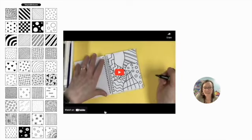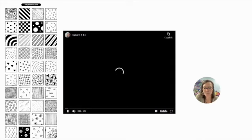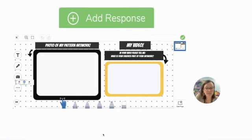And then when it is done, you are going to share it on Seesaw. So when you click the add response button, you will take a picture of it and place it right here in this frame. And then you'll make a video talking about what your favorite part of your artwork is and place your video inside this golden frame and then submit it to me.